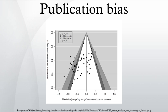Evidence of publication bias has also been found in meta-analyses published in prominent medical journals. Where publication bias is present, published studies will not be representative of the valid studies undertaken. Unless controlled, this bias will distort the results of meta-analyses and systematic reviews.